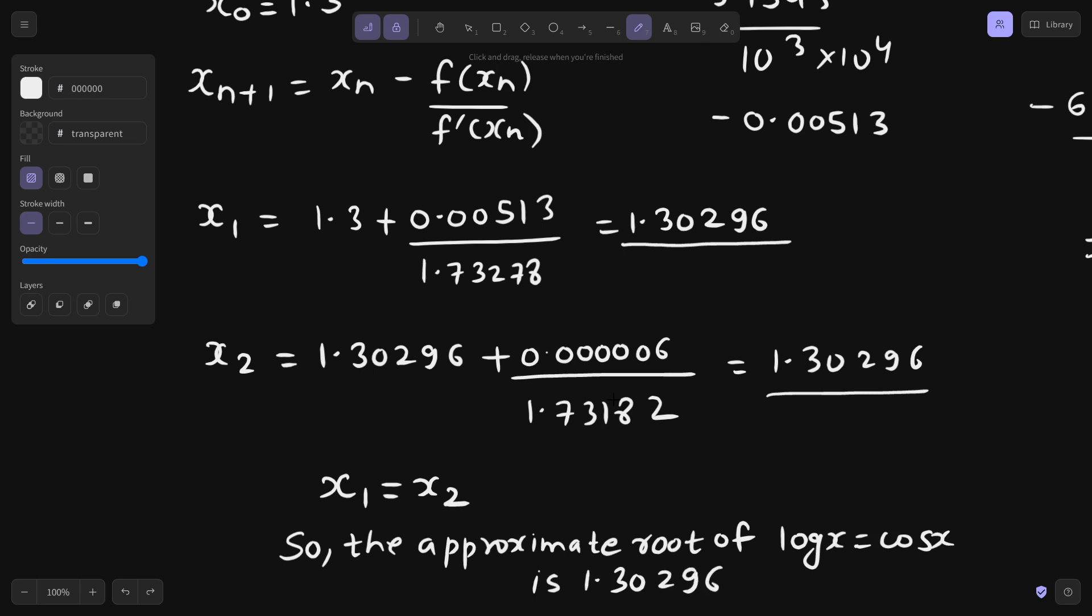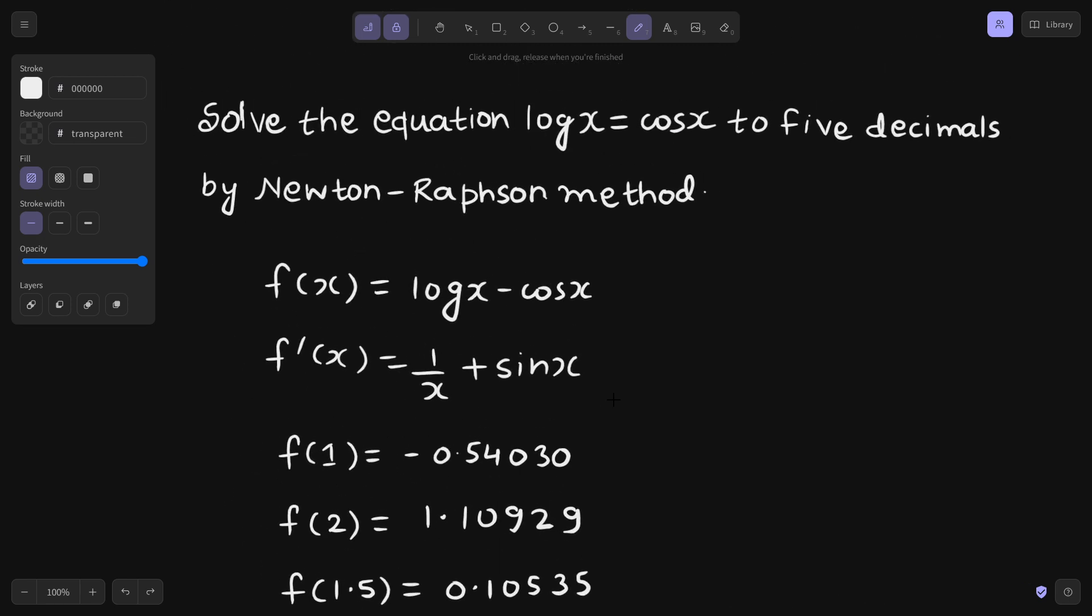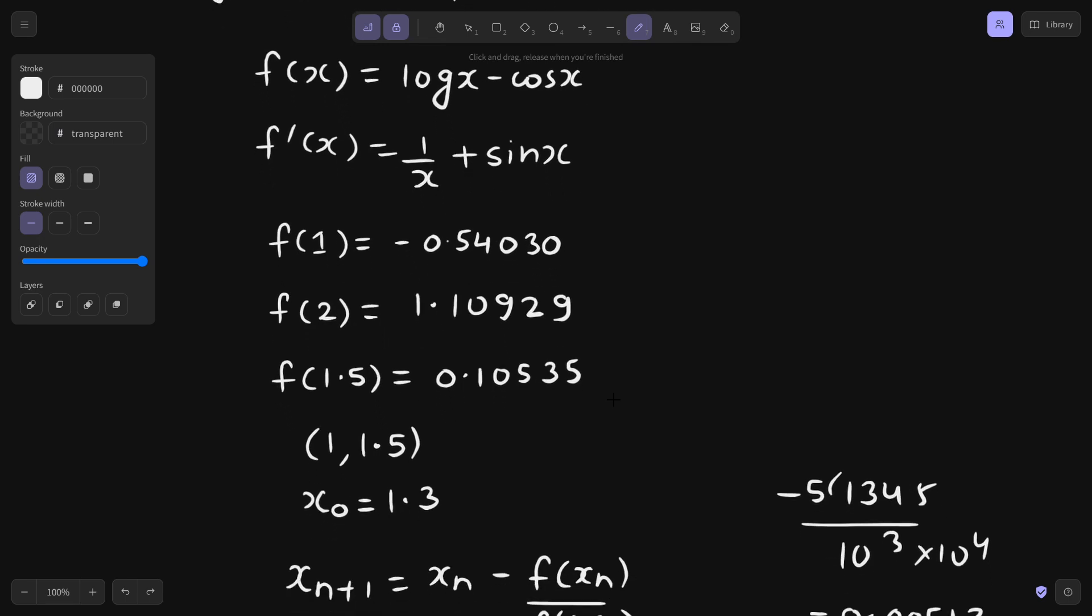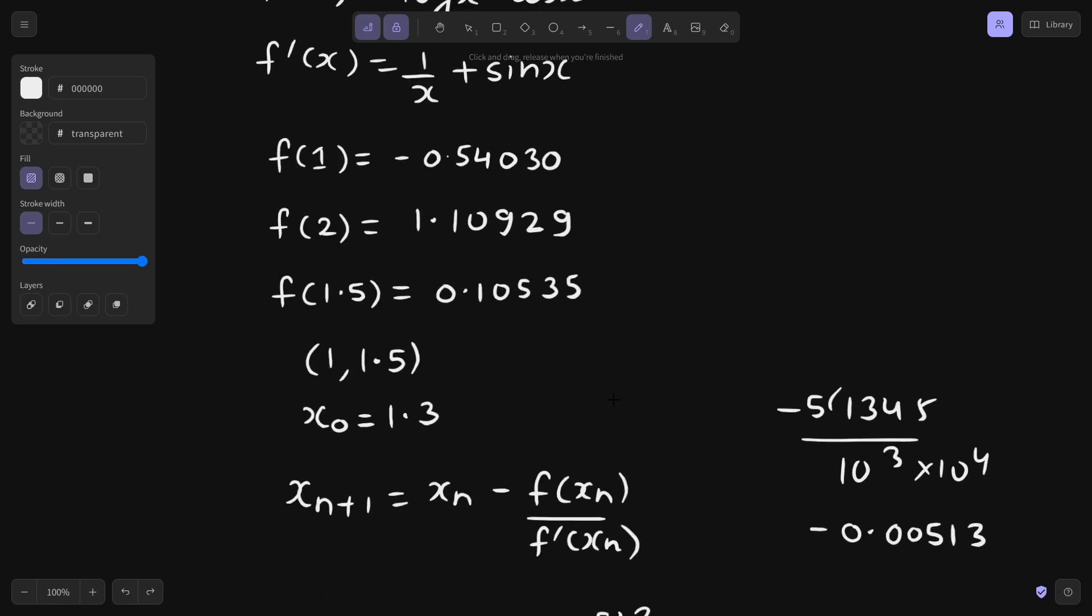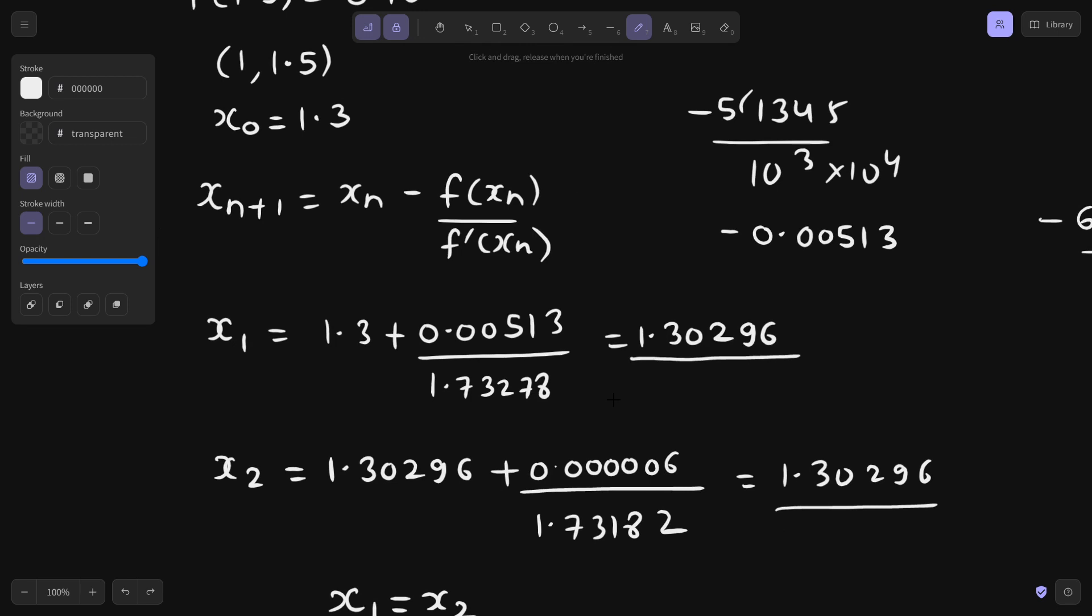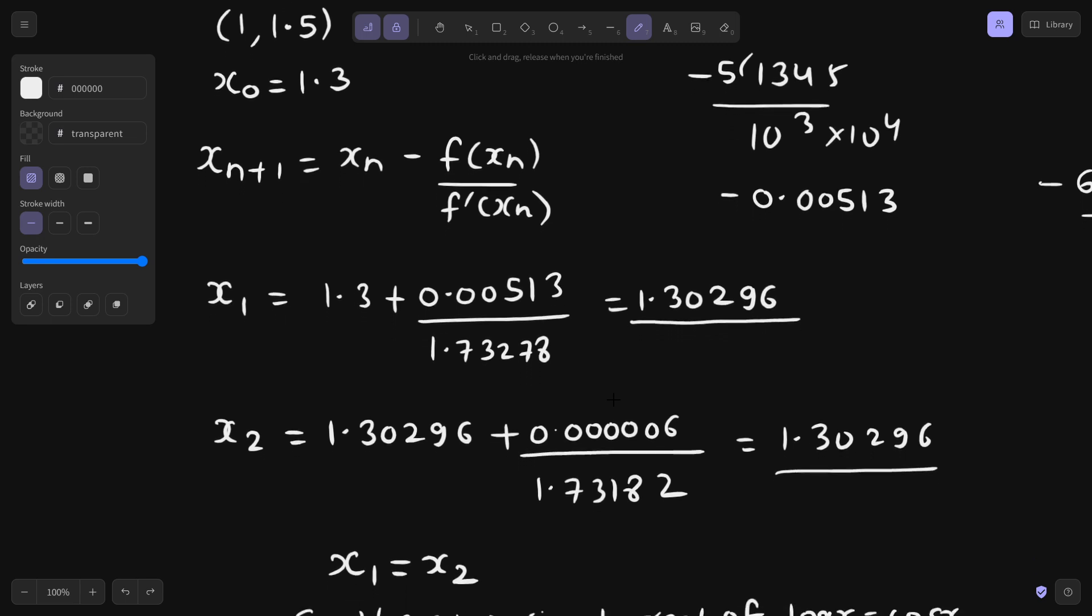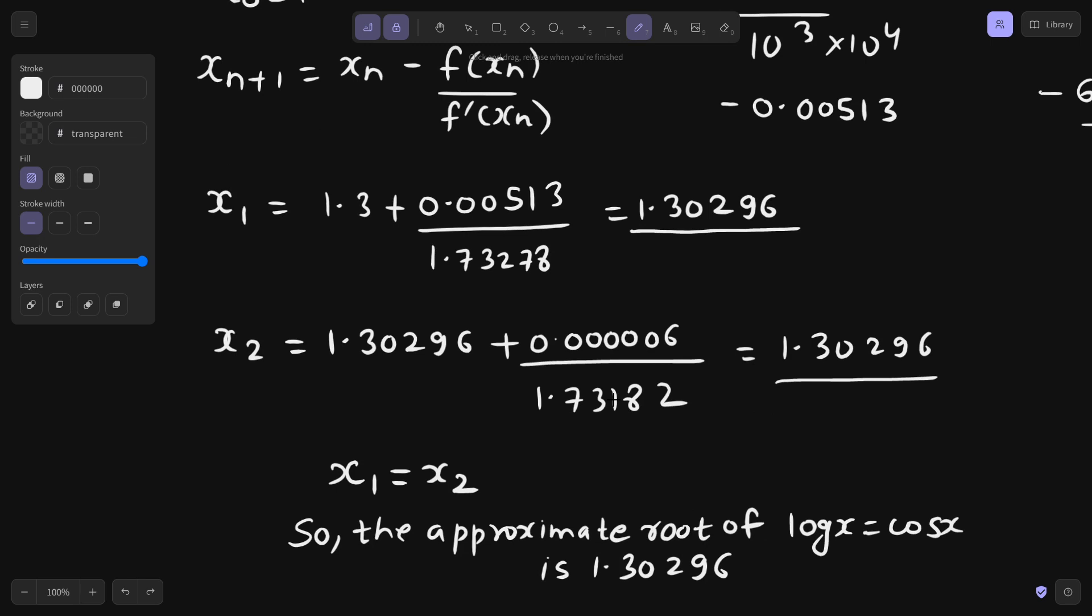That's it for today. As you can see, the basics are all again the same. You write f of x, you find its derivative, check in which interval the root lies. The root lies in the interval 1 to 1.5. We take x0 either 1, 1.5, or whichever is closer to 0, or any value in the middle. So I took that as 1.3. If you see, x1 value came out to be 1.30296. As they are matching, so the approximate root of log x equals cos x is 1.30296.